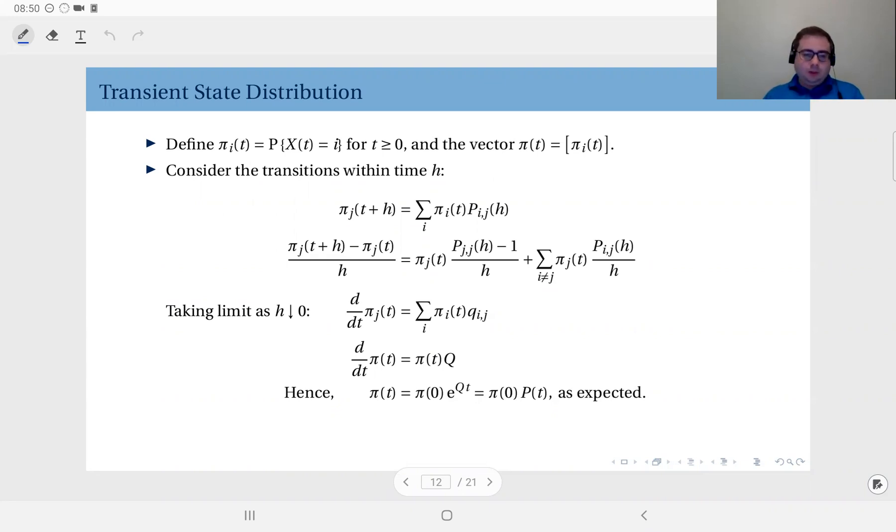We have defined this earlier, but let's recall the transient distribution is denoted in this way. This is the probability that at time t, you will see the Markov chain in state i. So using these components, we define the vector π(t), the distribution at time t. We would like to write this distribution in terms of the initial distribution π(0), and either the state transition probability matrix or the infinitesimal generator because we have already established their relationship.